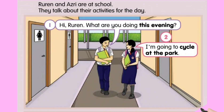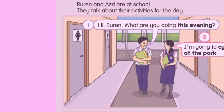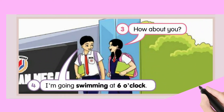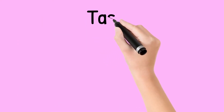Let's read together. Ruran and Azri are at school. They talk about their activities for the day. Hi, Ruran. What are you doing this evening? I'm going to cycle at the park. How about you? I'm going to go swimming at 6 o'clock.